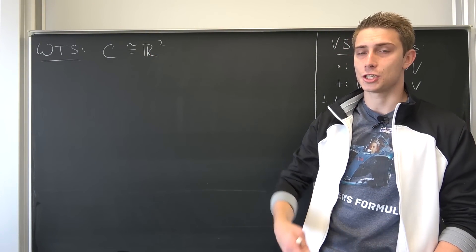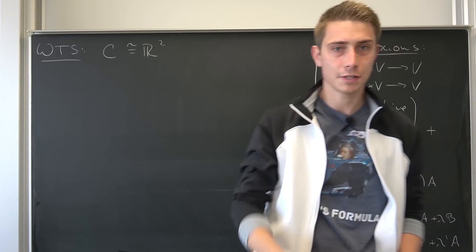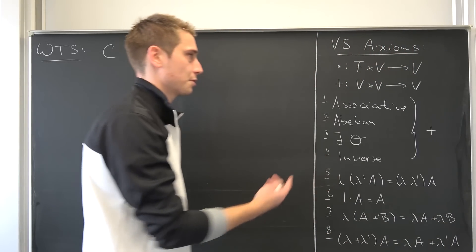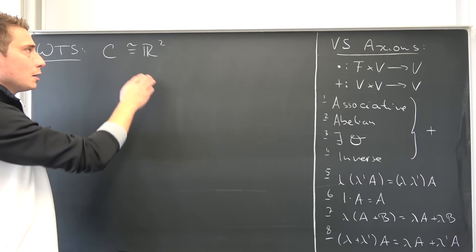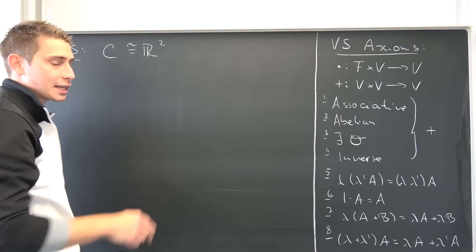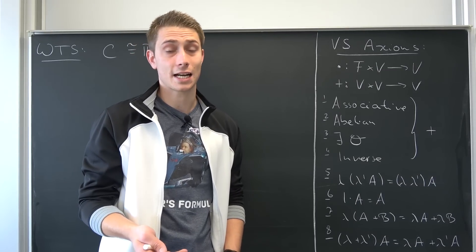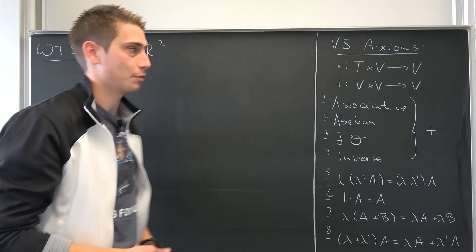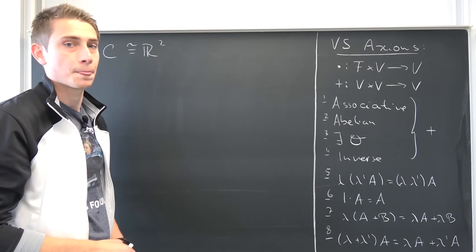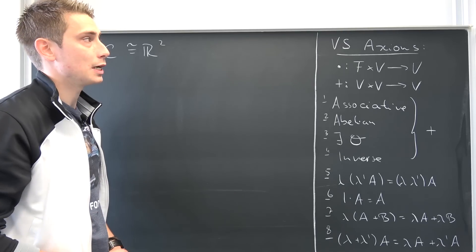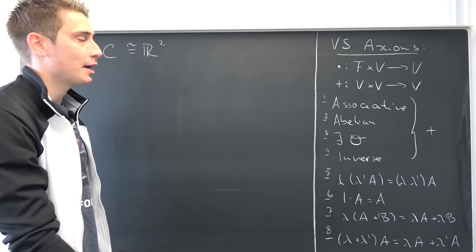Once we have verified all those vector space axioms, we can actually check if we have a vector space isomorphism between those two. It's going to be really important — bear with me. At first I would like to go verbally through everything.